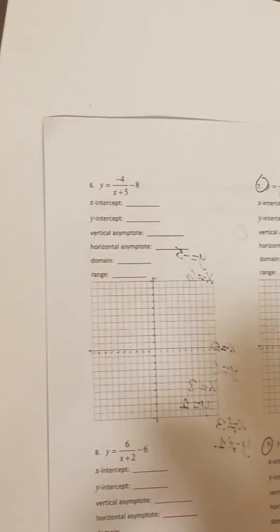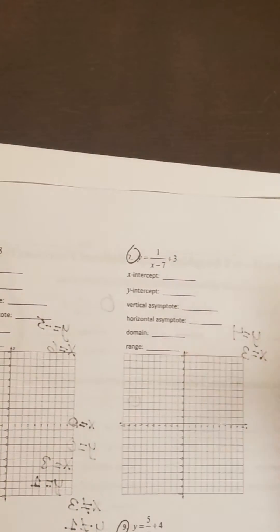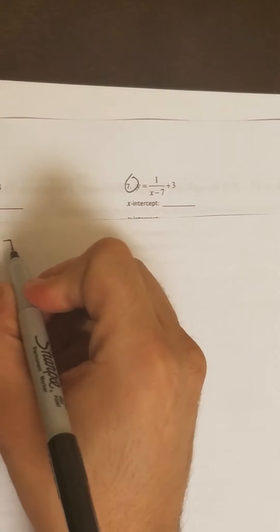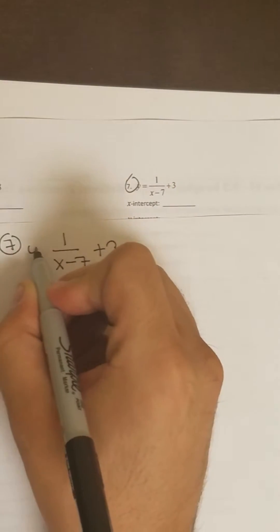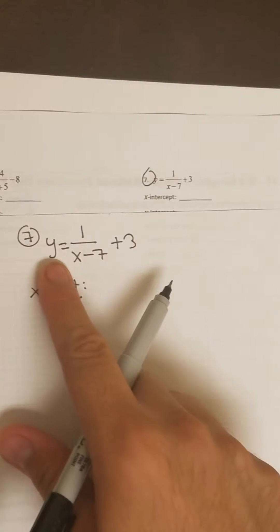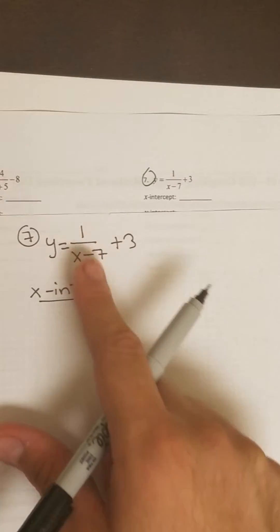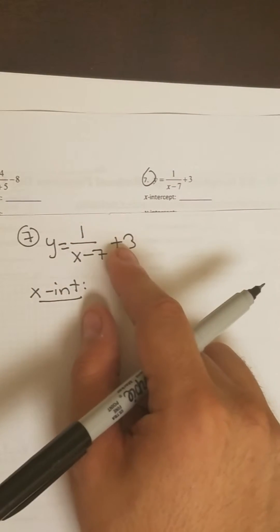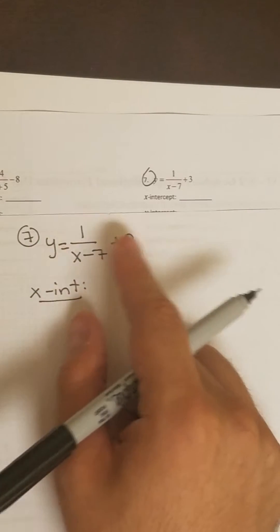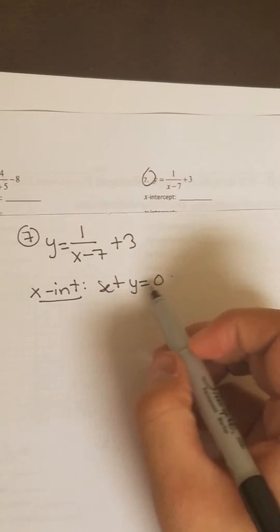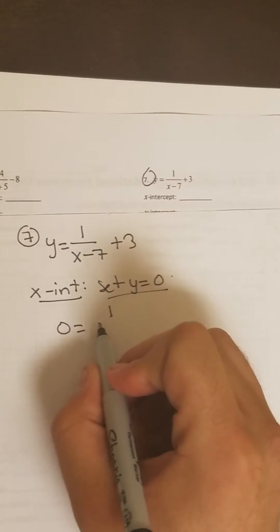So now let's look at the next one. We're going to look at one more of these problems so you can kind of see how it's done. For number 7, we're doing the same thing we did earlier. So we got y equals 1 over x minus 7 plus 3. We're going to find the x-intercept. Remember, to find the x-intercept you set y equal to 0. So we get 0 equals 1 over x minus 7 plus 3.